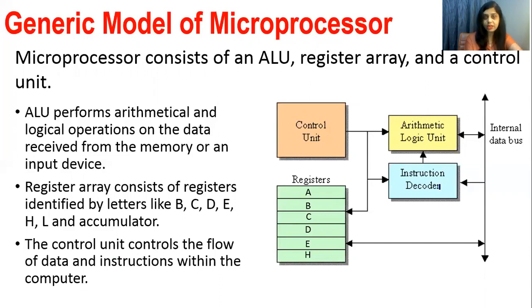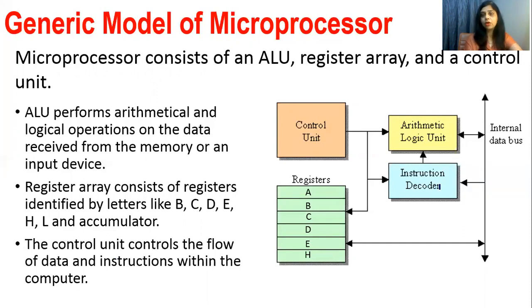Whenever we use a microprocessor, we write programming for it — coding in assembly language, which uses English-like instructions. A program is a sequence of instructions stored one after another in memory. The instruction decoder's job is to decode these instructions — to find out the meaning of each binary sequence, since the microprocessor is a digital device and only understands zeros and ones.